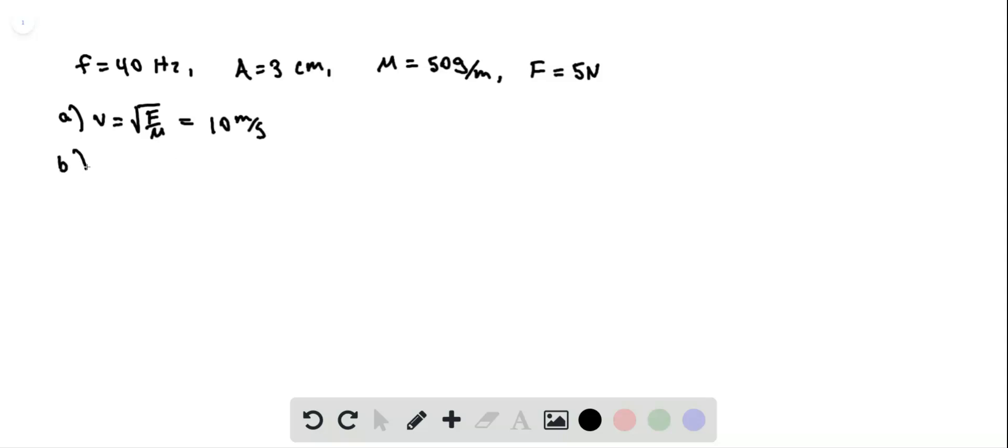B, we want to know what the function is that describes the wave. Actually, I skipped ahead. That's part C. Part B is we want to find the wavelength. We can use lambda. Our equation lambda is equal to v over f to tell us that it's 10 m per second over 40 Hz, which is 0.25 m. And that gives us lambda.